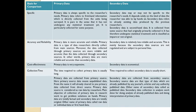Regarding specificity: primary data is always specific to the researcher's needs — it is pure in the sense that it has not undergone any statistical treatment yet and is collected for a particular purpose. Whereas secondary data may or may not be specific to the researcher's needs — it depends solely on the kind of data available. Secondary data refers to already existing data produced by previous researchers; it has undergone statistical treatment and is classified as impure or not original.